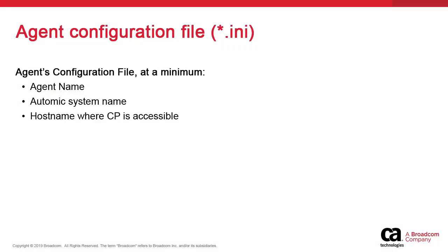Before we start the agent, as for any atomic automation components, we need to update the agent's configuration file. There's quite a bit of information in the file but we focus on three specific items: namely, the agent name which can be different from the host name, the atomic system name as it was defined when the engine was installed, and the engine host name so that the agent is able to communicate with the engine over a CP process. We also check the process ports.